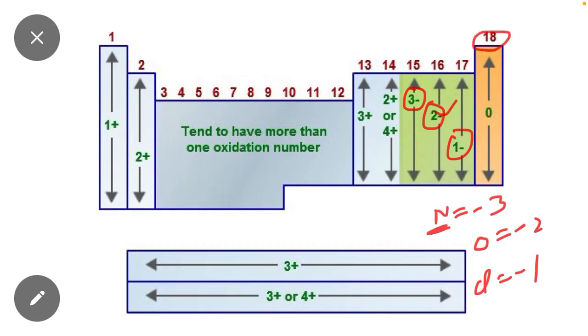Now, group 18 elements, which are called noble gases, show zero oxidation state because all the valence shells are completely filled. That's why they show zero oxidation state.